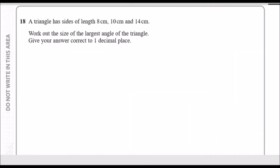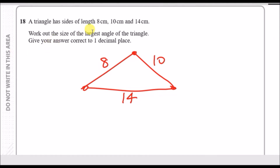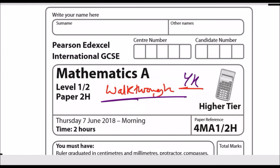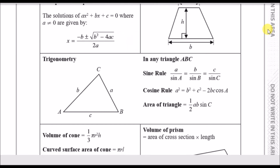Question 18: a triangle has side lengths 8, 10, and 14. We need the largest angle, which is always opposite the longest side — here, 14. We'll call it X. Since we have one angle and three lengths, this is a cosine rule problem — the sine rule requires two angles and two lengths, so it doesn't apply here.